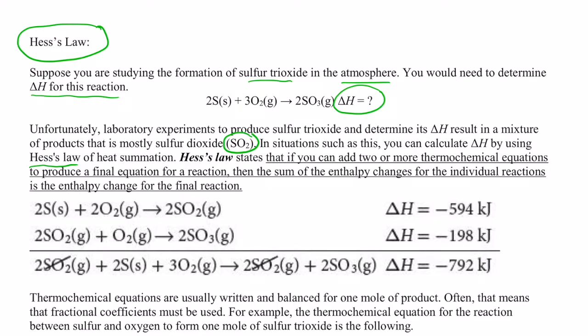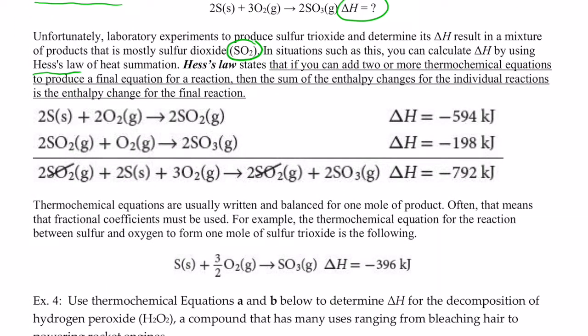Now, formally it's called Hess's Law of Heat Summation. This states that if you can add two or more thermochemical equations to produce a final equation for a reaction, then the sum of the enthalpy changes, the delta H's, for the individual reactions will be the enthalpy change for the final reaction.